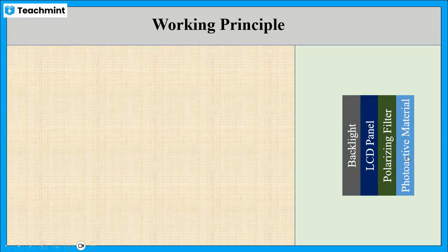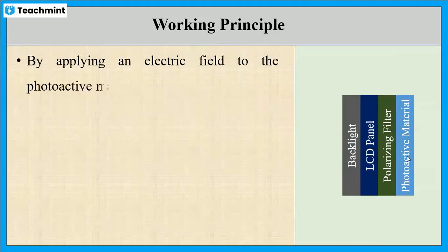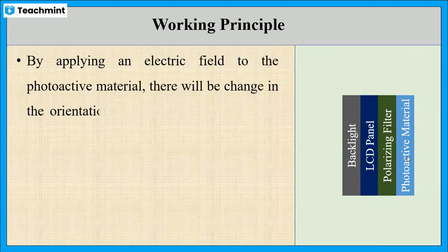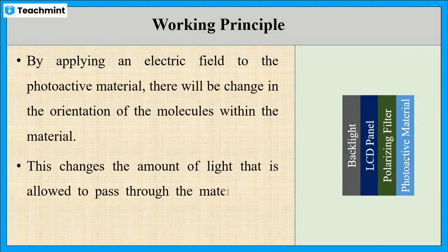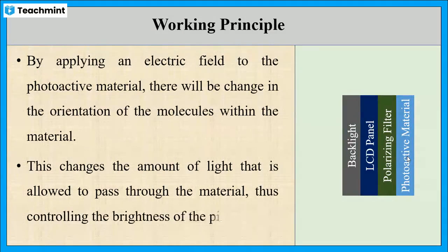By applying a potential to the photoactive material, there will be a change in the orientation of the molecules within the material. This changes the amount of light, and hence controls the brightness of the pixel.